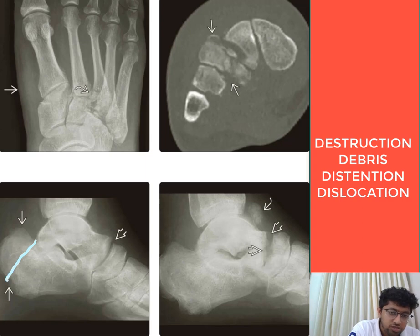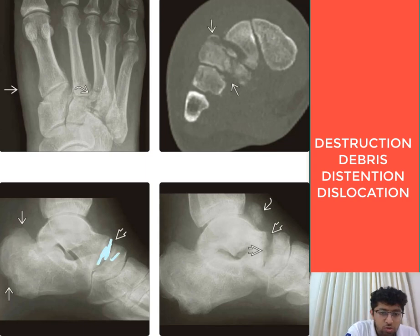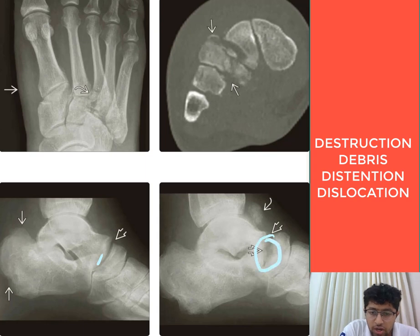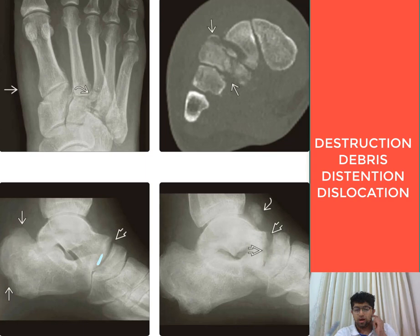This Charcot's joint case shows an insufficiency avulsion fracture of the calcaneum. At the talonavicular joint, there is slight concavity with some sclerosis. Two months later, the same patient developed destruction at the talonavicular joint with a distended joint cavity and debris — demonstrating how Charcot's joint progresses through destruction, debris, dislocation, and distension.